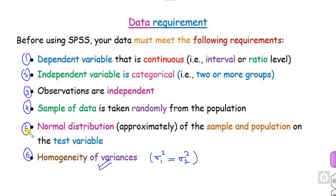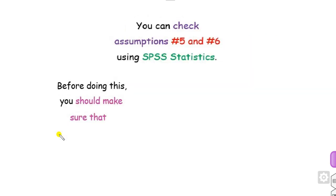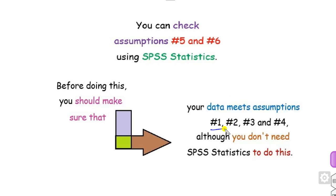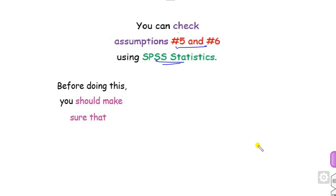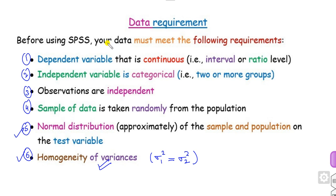You can check assumptions 5 and 6 in SPSS. But before doing that, you must make sure that assumptions 1, 2, 3, and 4 are already met, because we do not need SPSS to verify those. For example, you just need to check manually whether the dependent variable is continuous, whether the independent variable is categorical, whether observations are independent, and so on.